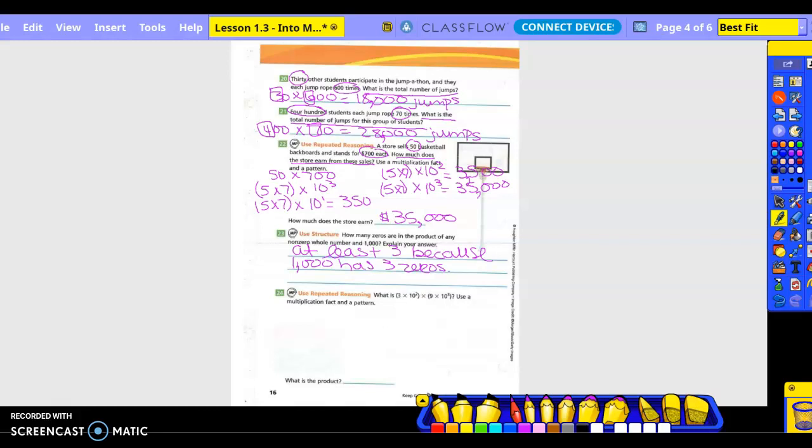Number 24, use patterns. What is 3 times 10 to the second power times 9 times 10 to the third power? Use the multiplication factor and pattern. So basically we need to get up to 3 times 9 times 10 to the what power? 5th, right? So we do 3 times 9 times 10 to the first power, which equals what?